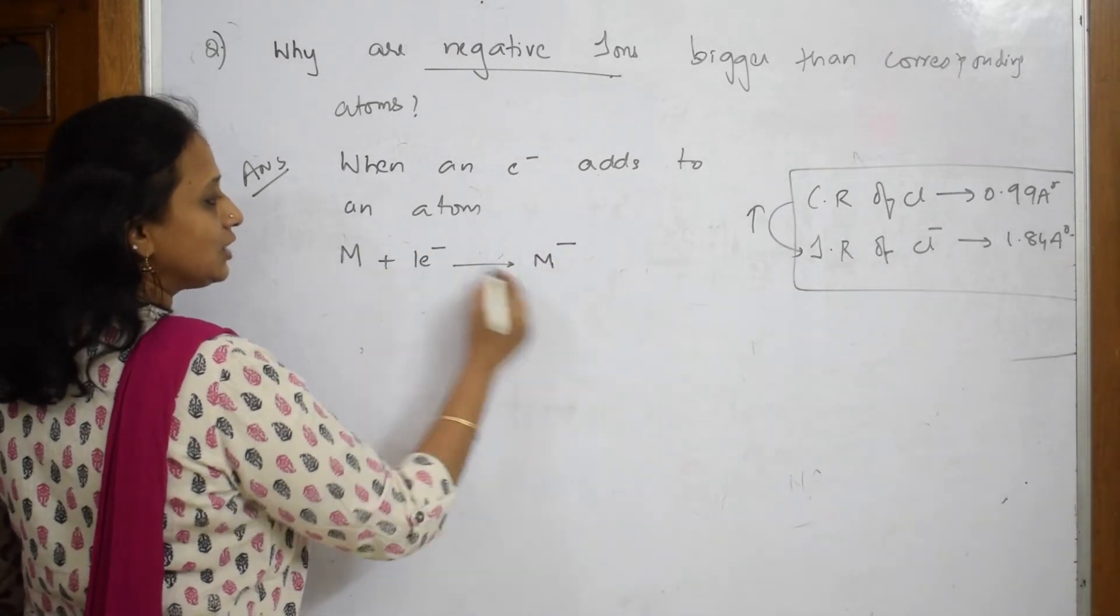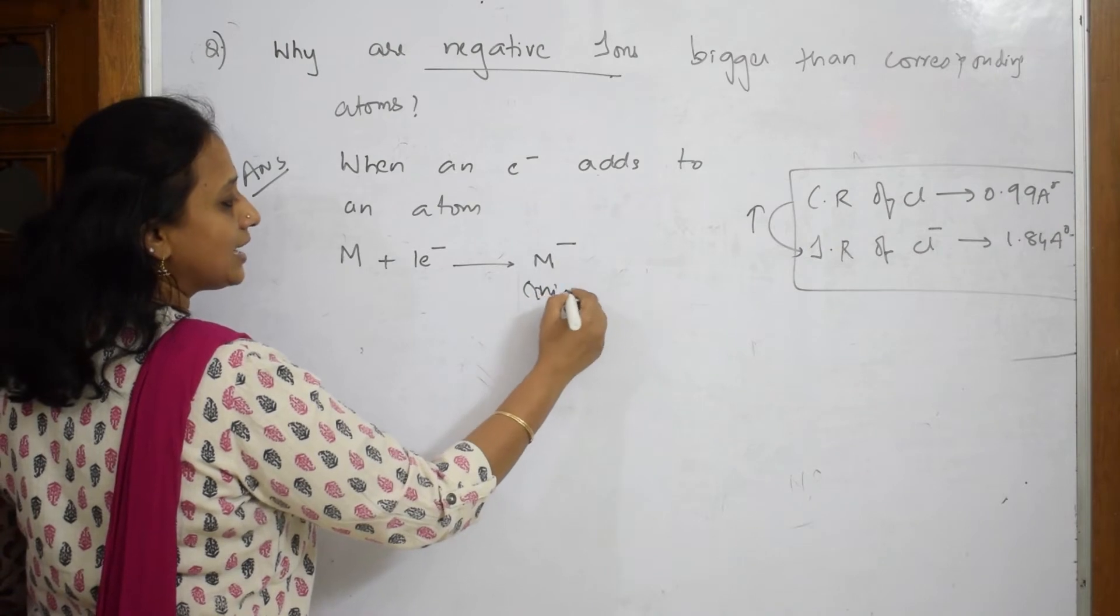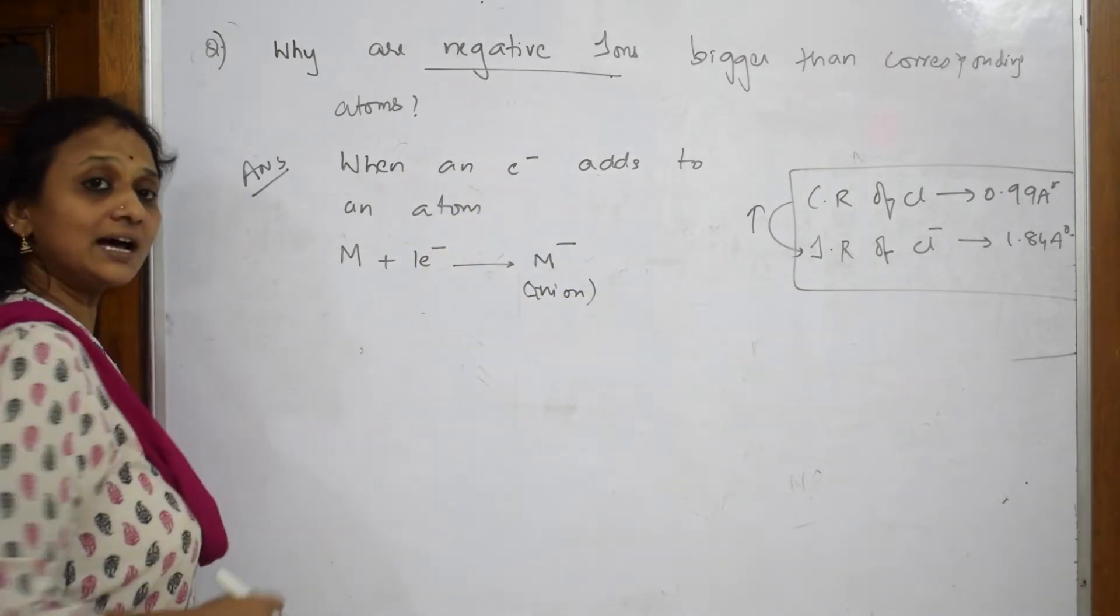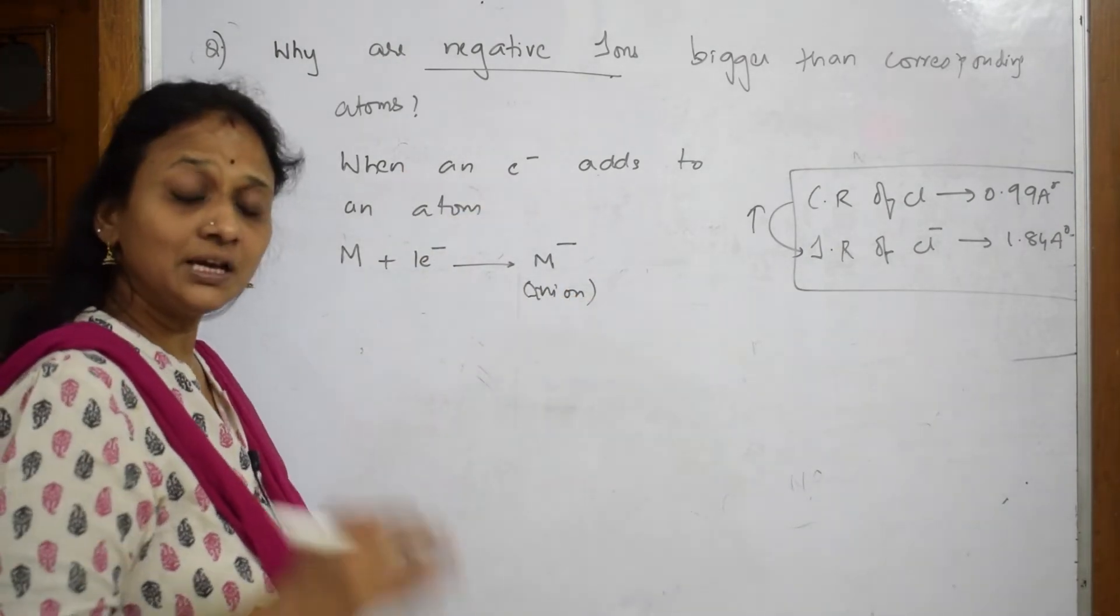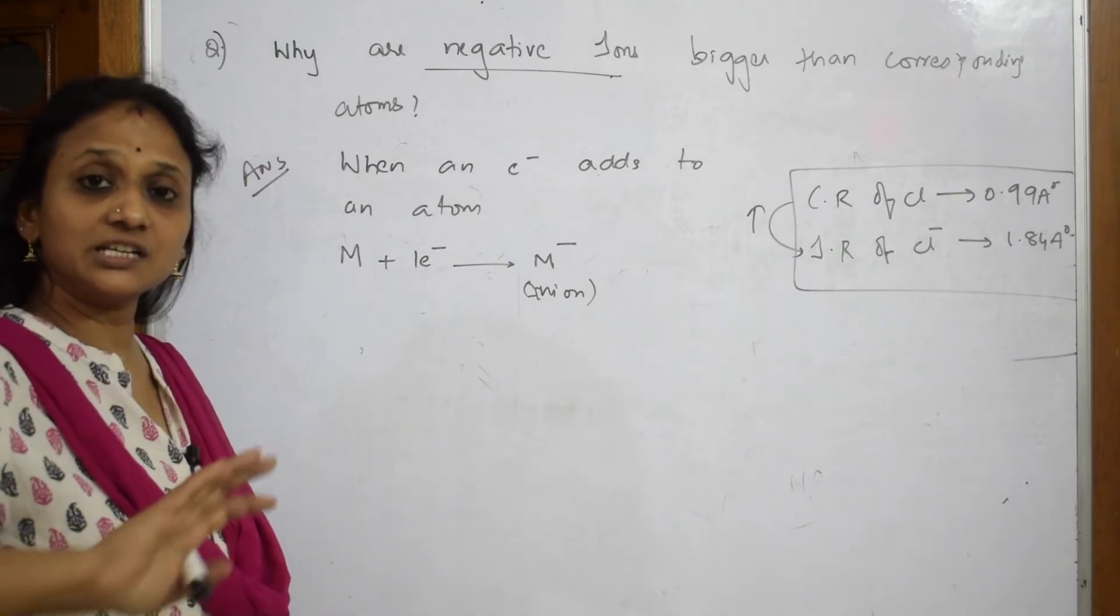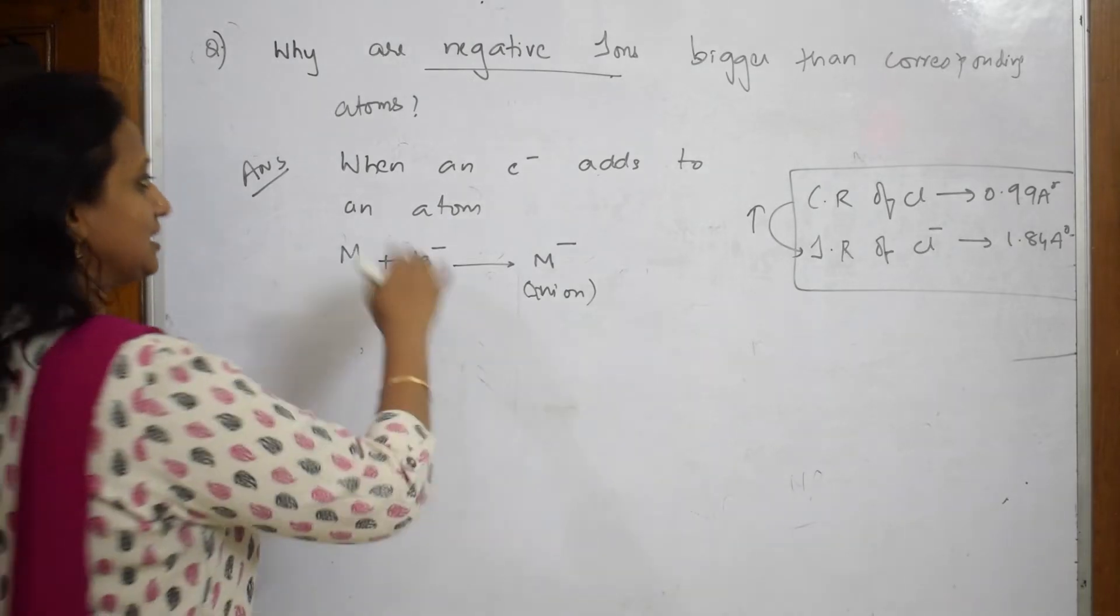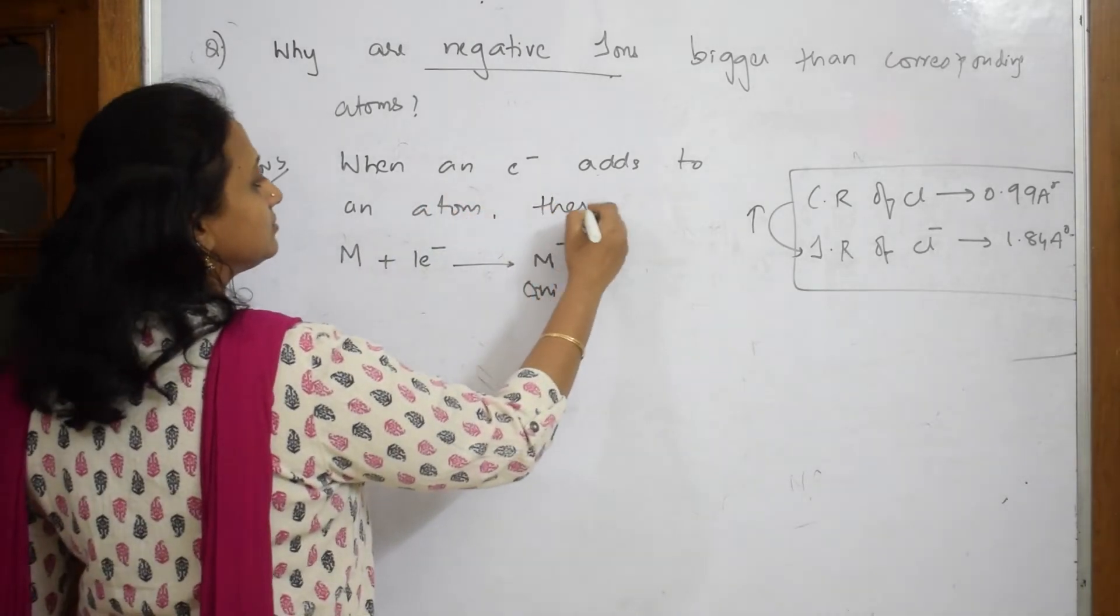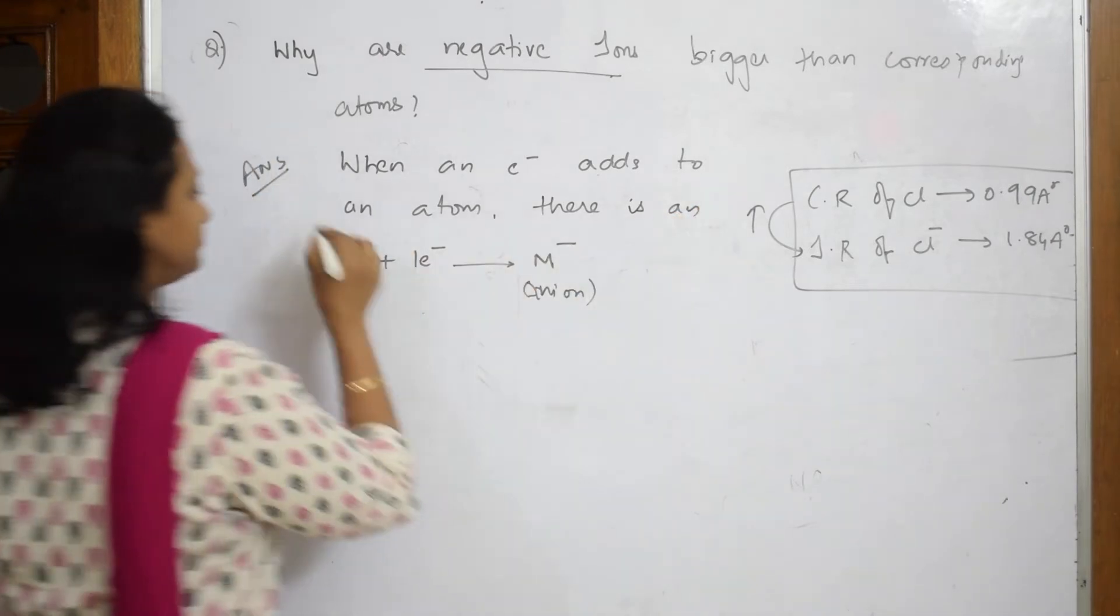When an electron adds to the atom, what will happen? There is an increase in number of electrons—you are adding electrons one after the other. There is an expansion of electron cloud. Let us write that: expansion of electron cloud.